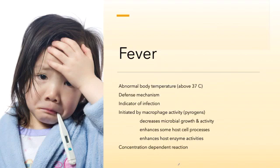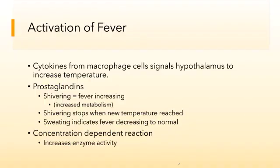The fever or pyrogenic response is a concentration-dependent reaction, and it involves phagocytic cells, the hypothalamus, and some chemical signals. Fever is activated by a set of cytokines produced by macrophages, and these cytokines enter into the bloodstream. They move throughout the bloodstream and eventually reach the hypothalamus. The hypothalamus is the thermostat of the body — it's up in the brain, and it decides what the body temperature is going to be.